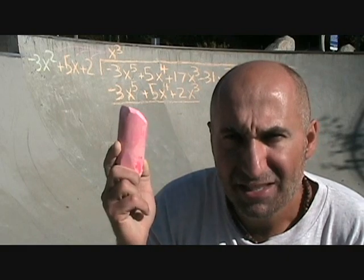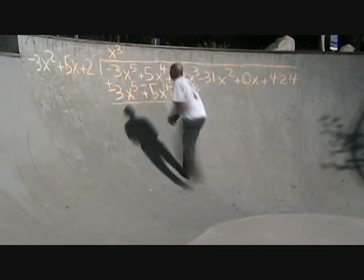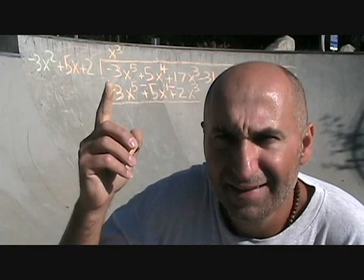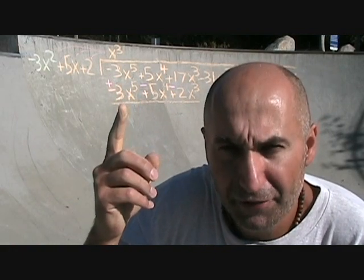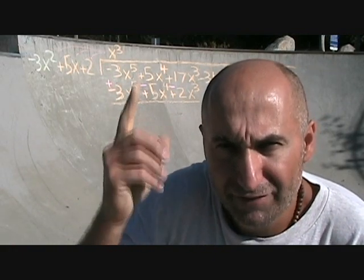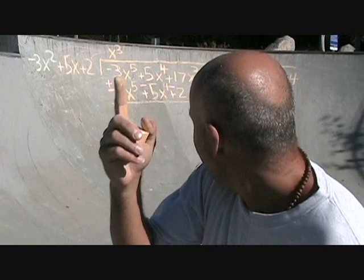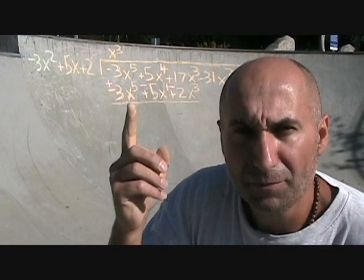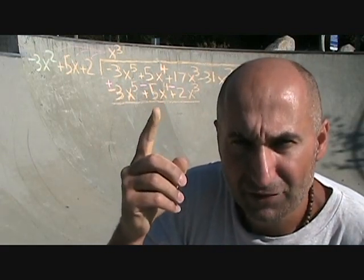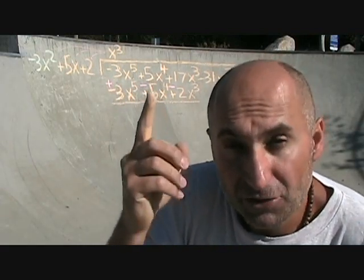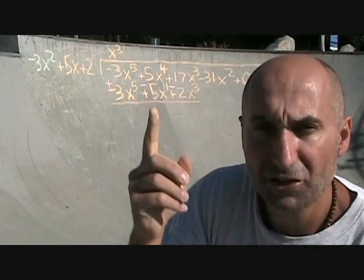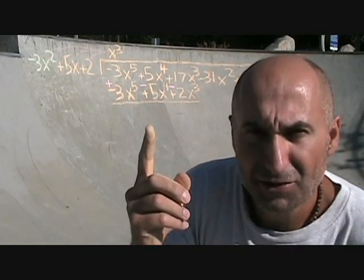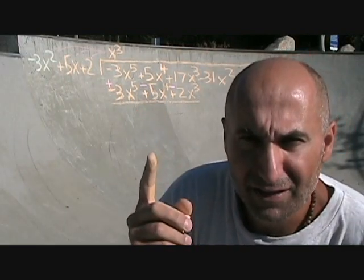Now we're going to change all the signs and add them. Negative 3x⁵ plus 3x⁵ — they cancel each other. 5x⁴ minus 5x⁴ — these two cancel each other. And 17x³ minus 2x³ is going to be 15x³.